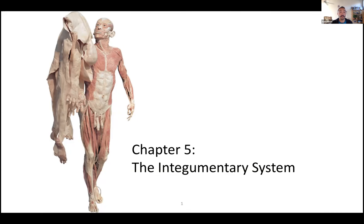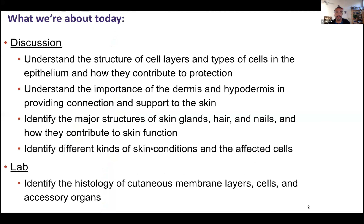The integumentary system, which is made of your skin, hair, nails, and glands, they all make up this full system to cover, protect, and do other things for your body. We'll understand all the different cells and cell layers found in the skin — in the superficial layer called the epithelium, and deeper layers, the dermis and hypodermis. We'll look at structures like glands, hair, and nails, and how they contribute to overall skin function. We'll also go over some interesting skin conditions by the end of this.